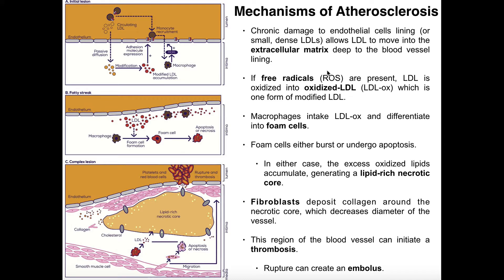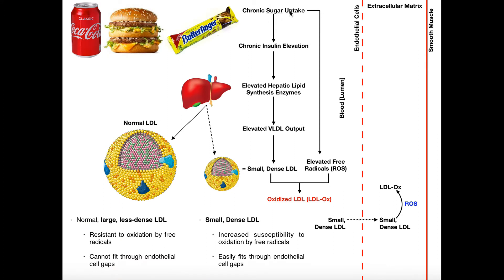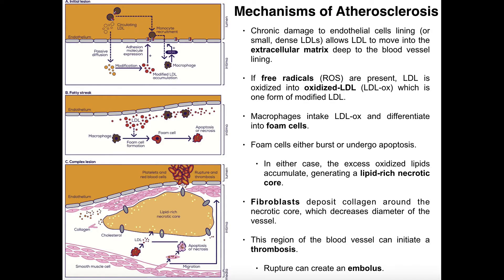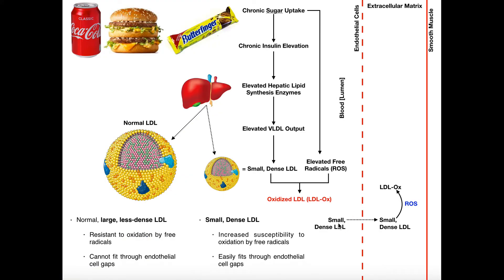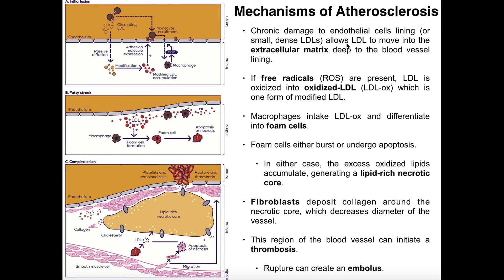Atherosclerosis can occur through multiple mechanisms, but generally we have chronic damage to the endothelial cell lining, caused by inflammation. Inflammation is majorly caused by chronic sugar intake — having a really high sugar intake for a long period of time gives you a high amount of inflammation that can damage these endothelial cells. When you damage those cells, that can actually abnormally increase the diameter of the gap between them, so small dense LDLs have an even easier time getting through. Those LDLs move into the extracellular matrix, and if free radicals are present, that LDL is oxidized into oxidized LDL, which we abbreviate LDL-ox — one form of modified LDL.